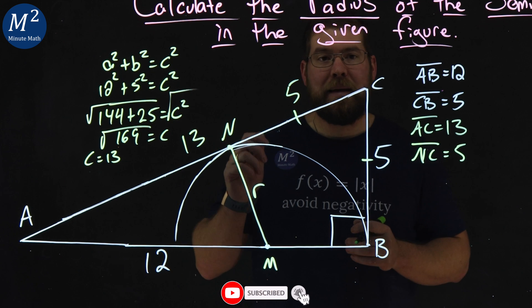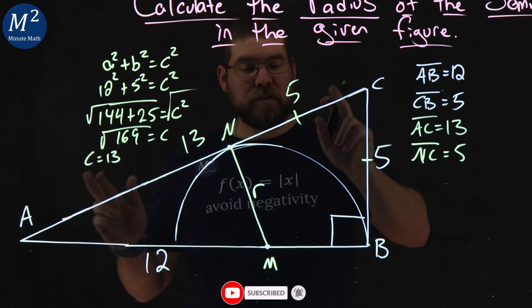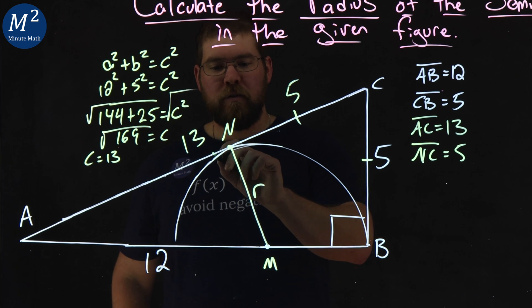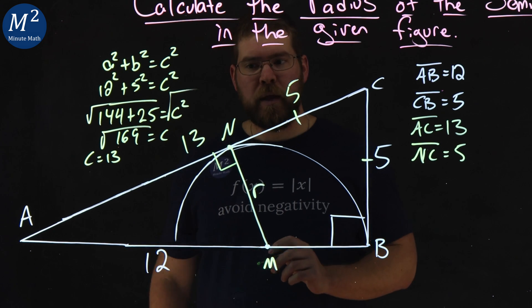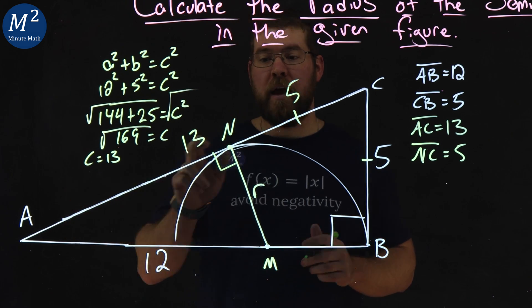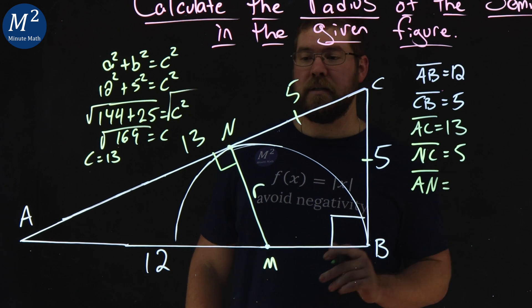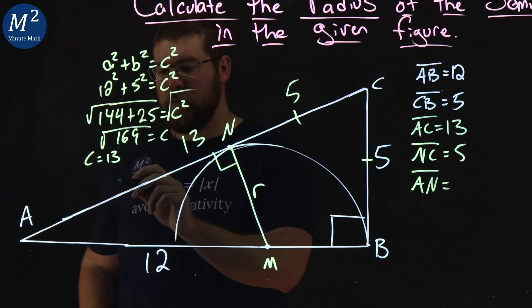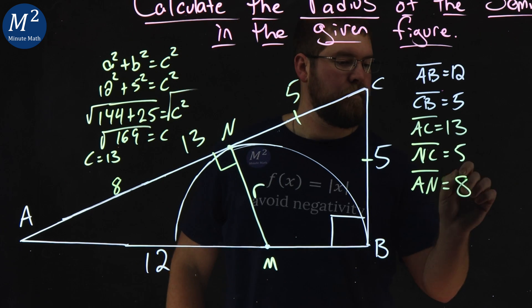What else can we figure out with that being tangent? Since AC is tangent to our circle, the radius that's created to the center is a right angle here. And now, I also can find the length of AN. AN is equal to 13 minus the five, right here, that gives me an eight.